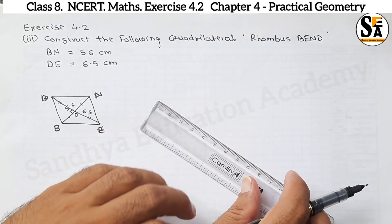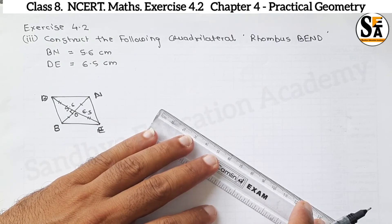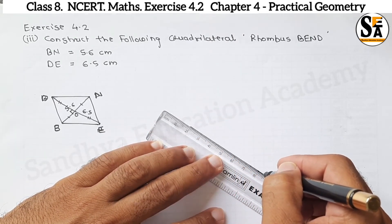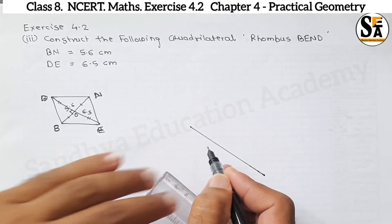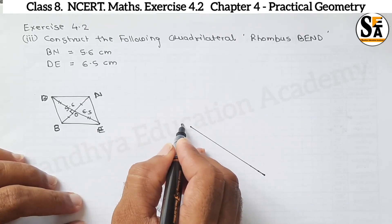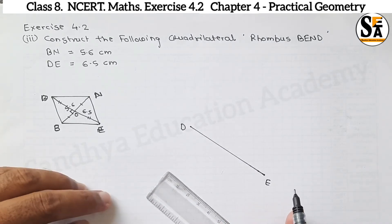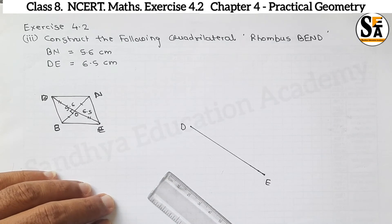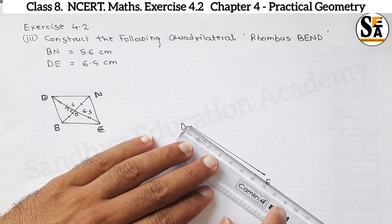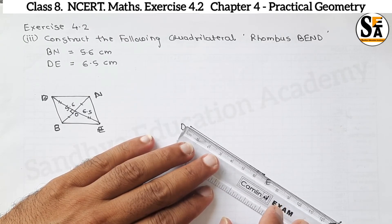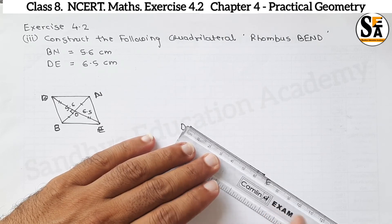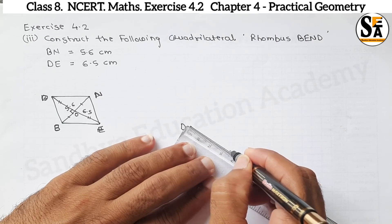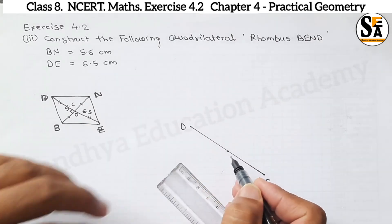First we will draw diagonal DE = 6.5 cm. This is 6.5 cm — points D and E are marked. Since the diagonals are perpendicular, we will find the center point of DE. Center point is at 3.25 cm from either end. Mark this center point.